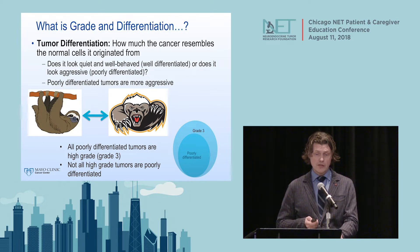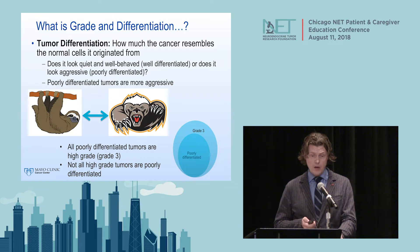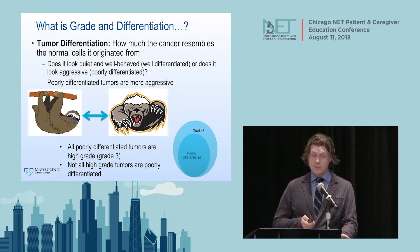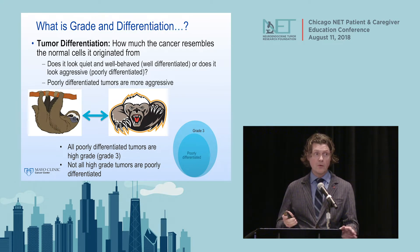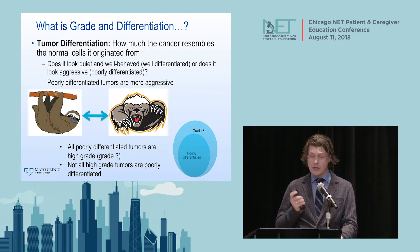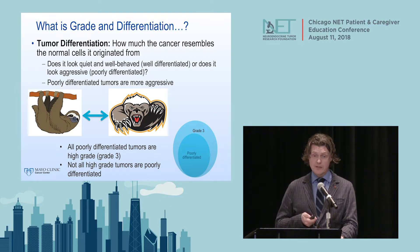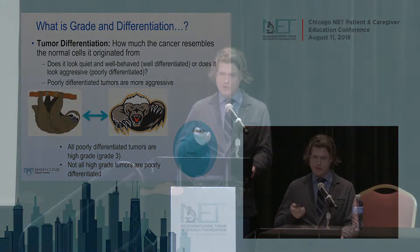An important point: all poorly differentiated tumors are high grade, but not all high grade tumors are poorly differentiated. This distinction is incredibly important and has become even more so in recent years. It's a bit too convoluted to go into in depth here, but we can hopefully discuss it offline.